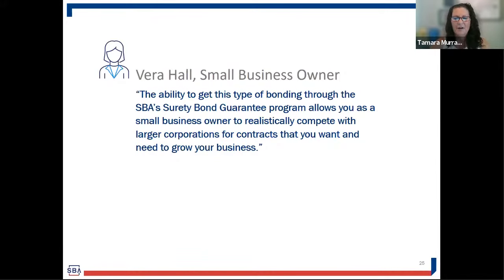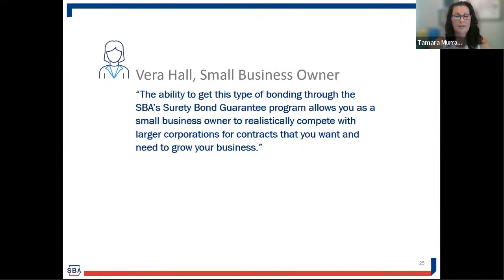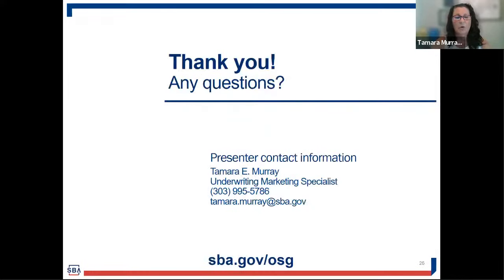Here's a recent SBA success story: when Vera Hall came to SBA, her company was limited to bonding projects no larger than $250,000. She applied for SBA's guarantee on a $650,000 project, we approved the guarantee, and her company was awarded the contract as the sole bidder. Just a couple of years later, this small business is now bonding projects over $3 million. Visit our website and connect with an agent, or put your question into the Q&A chat.